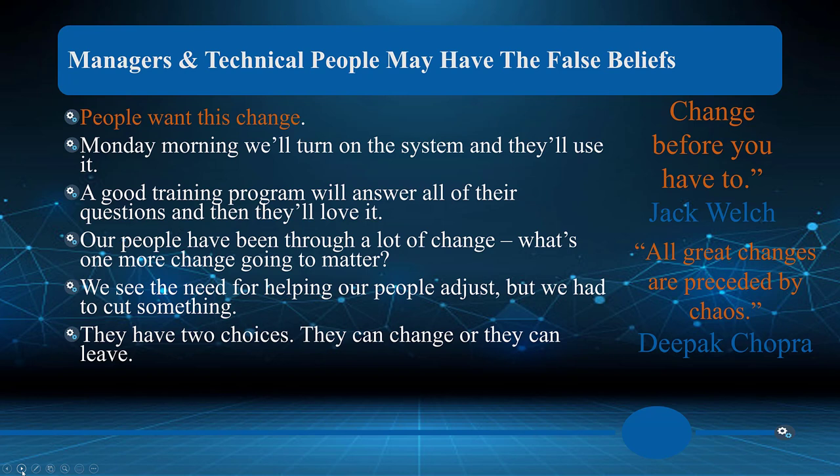Deepak Chopra is quoted as saying, 'All great changes are preceded by chaos.' What that means is we should consider embracing chaos. Chaos is indeed resistance and conflict. When I was doing my master's, instructors would intentionally create conflict — making someone responsible for challenging the group rather than reaching group consensus — thus creating better products, better services, better ideas. These are all huge false beliefs: that if we all suddenly agree, the meeting is done; or that a good training program means people will just embrace change.